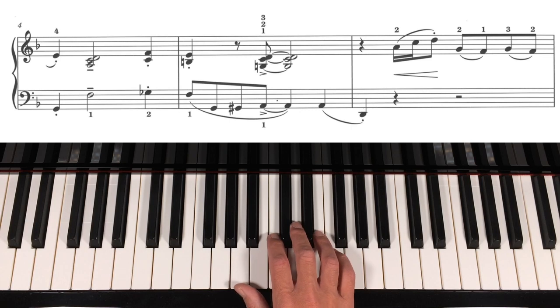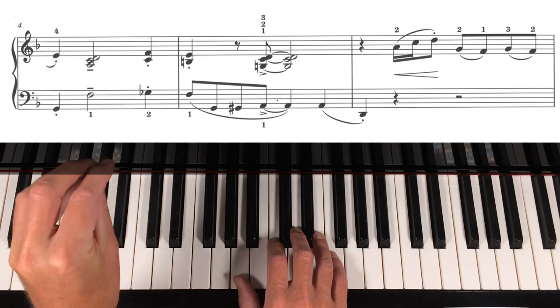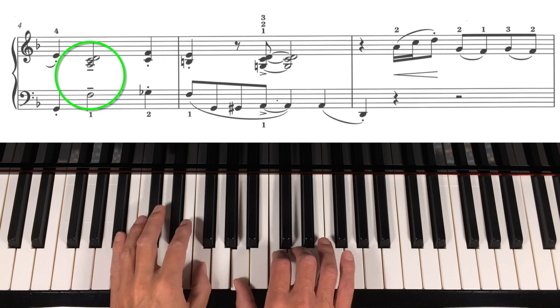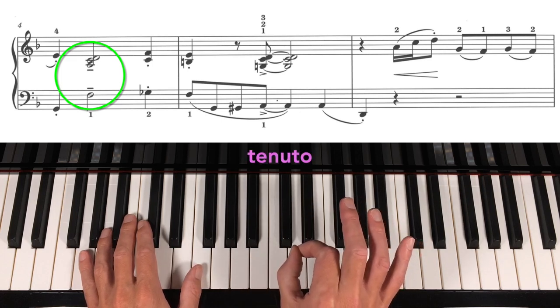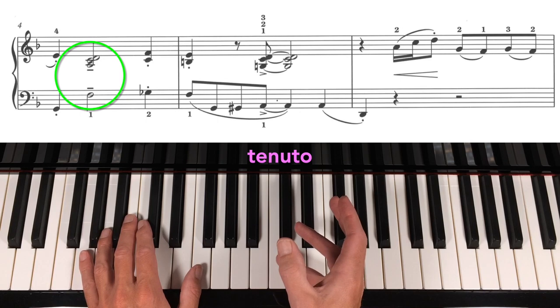Now then, we have all sorts of accents here. We've just seen in bar, my hole punch has taken off the bar number one, two, three, bar four. Yeah, we've just seen that chord there, haven't we? Now that has a tenuto sign. Make sure we hold onto the note, give it its full value.